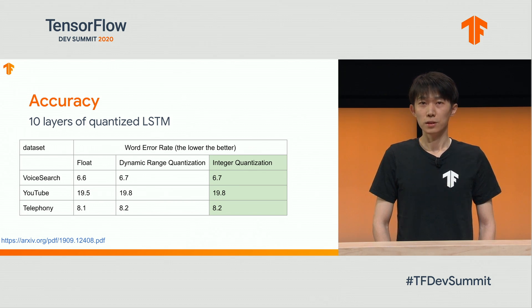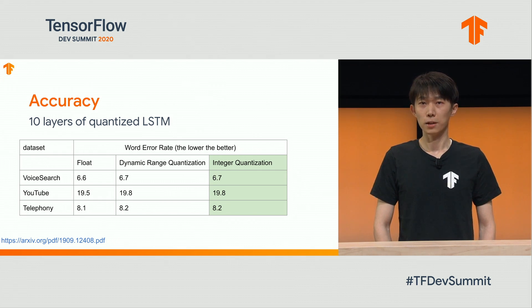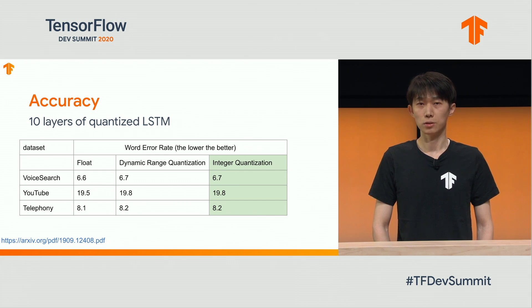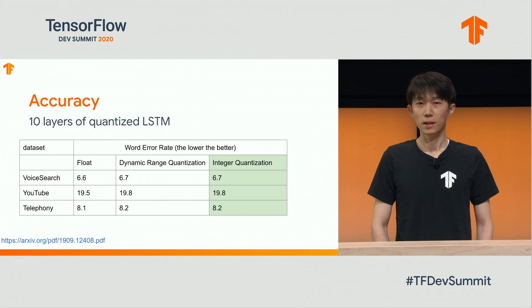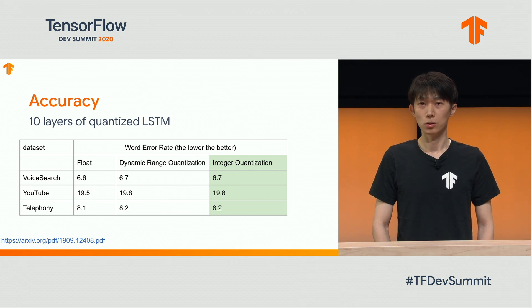Now we've seen the details of RNN quantization. Let's look at accuracy and performance. This table shows published accuracy numbers on a field dataset. It's a speech recognition model consisting of 10 layers of a quantized LSTM. The integer quantized model has the same accuracy as the dynamic range quantized model, and the accuracy loss is negligible compared to the float case. Also, this is a pruned model, so RNN quantization works with pruning as well.